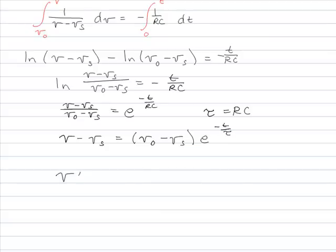And finally, I can rewrite that as V(t) equals Vs plus V0 minus Vs times e to the negative t over tau. And this is valid for t greater than zero. Wonderful, very exciting, right?